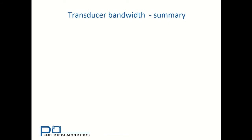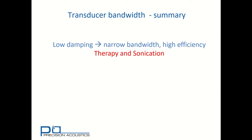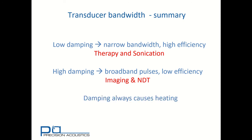So to summarize, we've seen that low damping transducers have a narrow bandwidth but very high efficiency. This is typical of therapy and sonication applications. High damping transducers lead to very short broadband pulses, but the efficiency has been reduced, and we typically find these in imaging and non-destructive testing applications. And damping always causes heating.